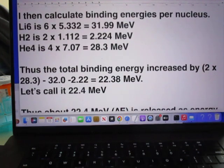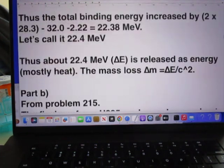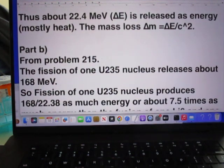I then calculate binding energies per nucleus. So the lithium-6 he must multiply by 6, the deuterium he must multiply by 2, and the helium-4 he must multiply by 4. Does the total binding energy increase by this amount? Look closely what it was before and what it is after, and then you see it has increased by 22.4 MeV. Thus about 22.4 MeV, let's call it delta E, is released as energy which is mostly heat. If you want to express it in terms of mass loss, delta M, you can use Einstein's equation. You see that there.